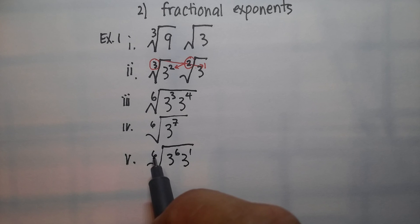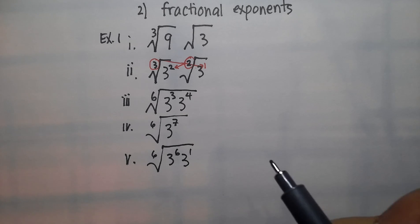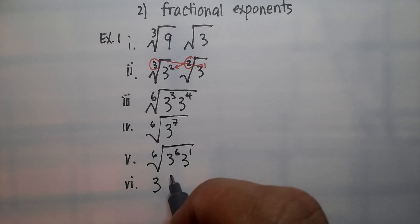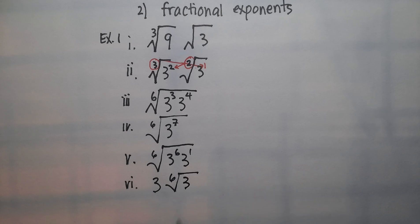Well, I know that the sixth root of three to the sixth is just three. So I pull that out. And then what's left over is the sixth root of three to the first. And there's my answer.